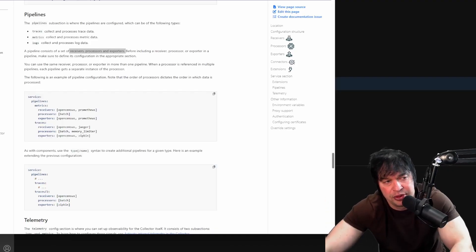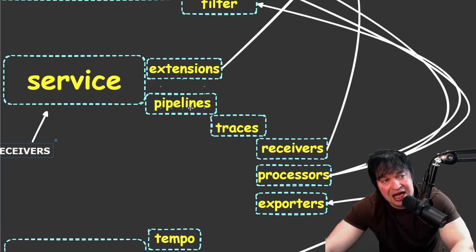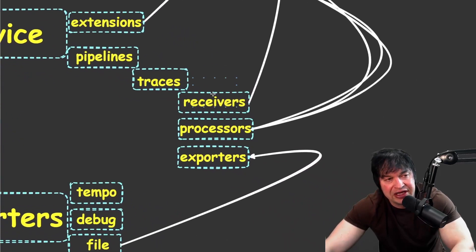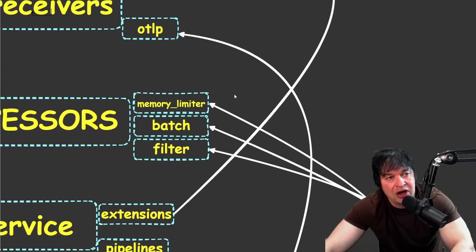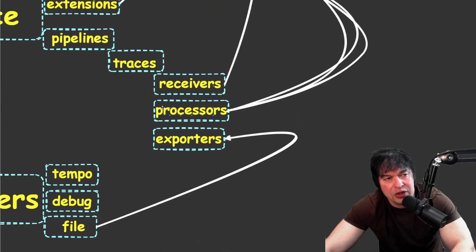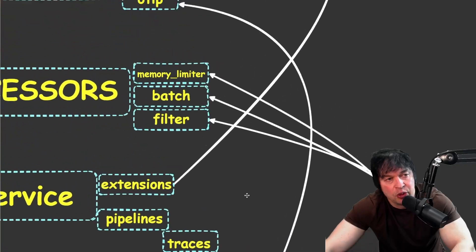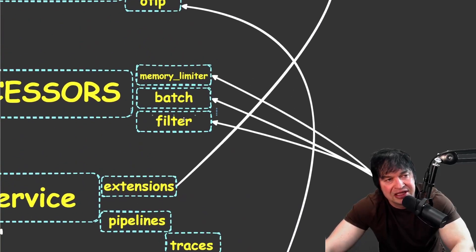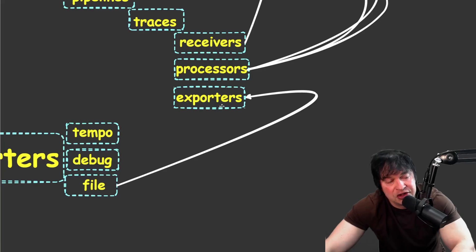We're building a tracing pipeline. A trace pipeline consists of receivers, processors, and exporters, and the service section holds the pipeline and any extensions. Under pipeline traces we bring it all together: we define our receiver pointing to the OTLP receiver, our processors section pointing to memory limiter, batch, and filter, and our exporters. Exporters are the third main step - what to do with the telemetry after receiving and processing it.